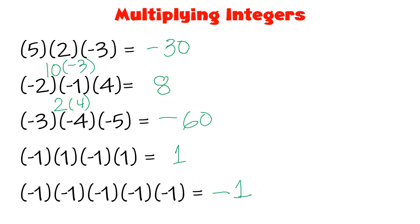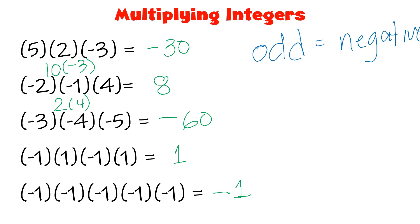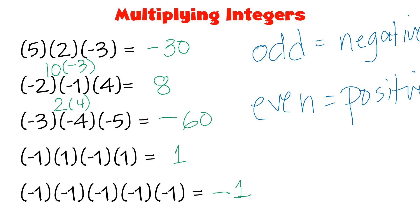So to summarize: if the number of negative signs is odd, your answer is negative. But if the number of negative signs is even, then your answer must be positive.